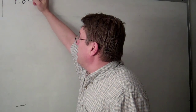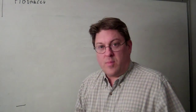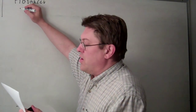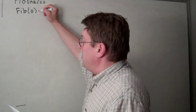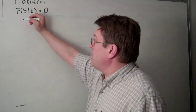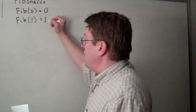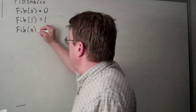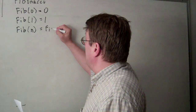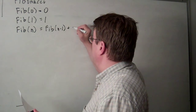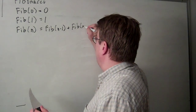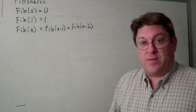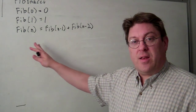Let's take a look at Fibonacci, just to make sure everybody understands about this. We can define the Fibonacci sequence like this: Fibonacci of 0 equals 0, Fibonacci of 1 equals 1, and Fibonacci of n equals Fibonacci of n-1 plus Fibonacci of n-2. If you're not familiar with that, then this is going to be a pretty hard video to watch. You need to understand this recursion process.